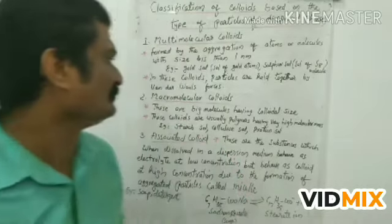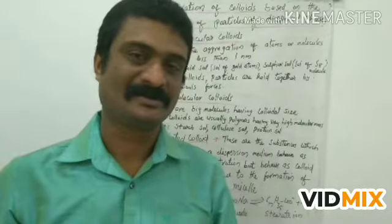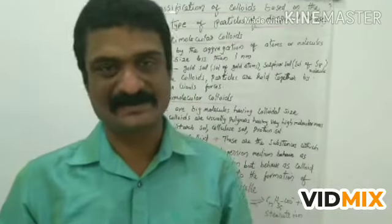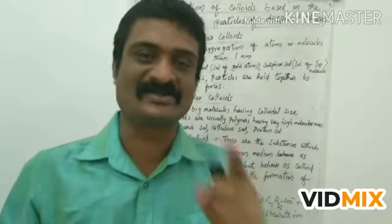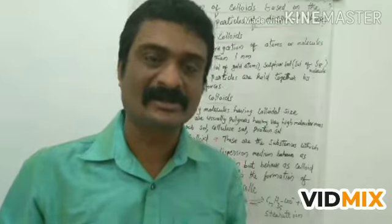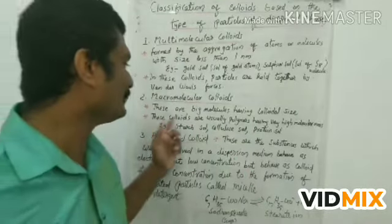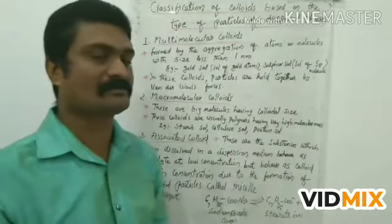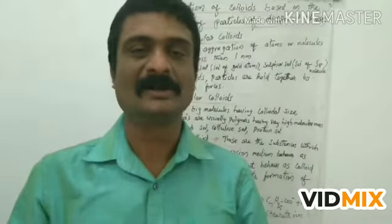Number two: macromolecular colloids. 'Macro' means big — these are big molecules, these are macromolecules having colloidal size. These are formed by polymers. These colloids are usually polymers having very high molecular mass. For example: starch, cellulose, protein sol.